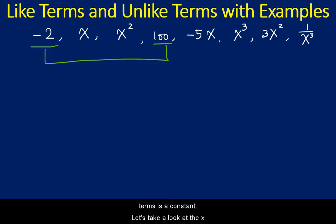And none of the next four terms is a constant. Let's take a look at x. x squared is not a like term because the definition says that variable must be raised to the same power. Negative 5x? Yes, because this variable x raised to the first power. The like terms can have different numerical coefficients. So x and negative 5x are like terms.